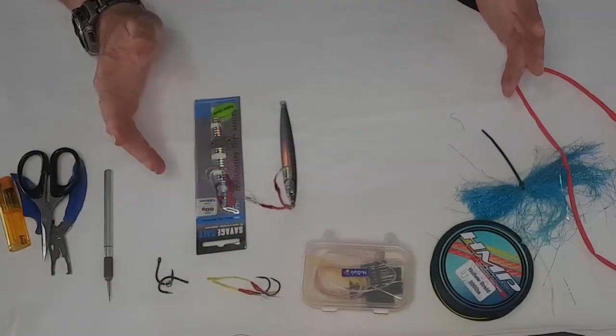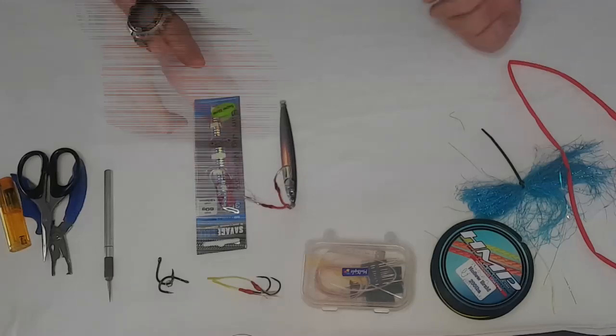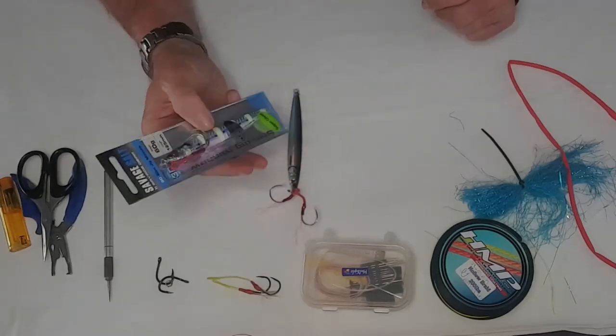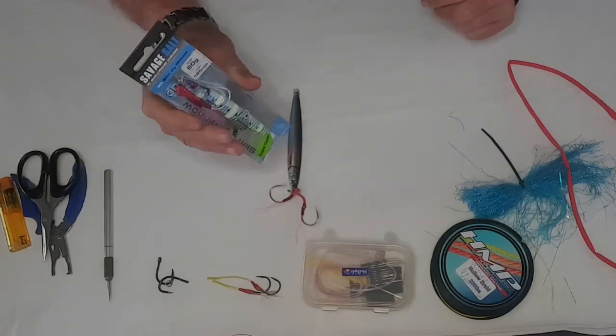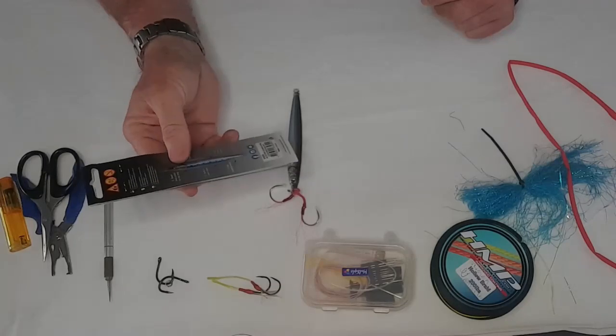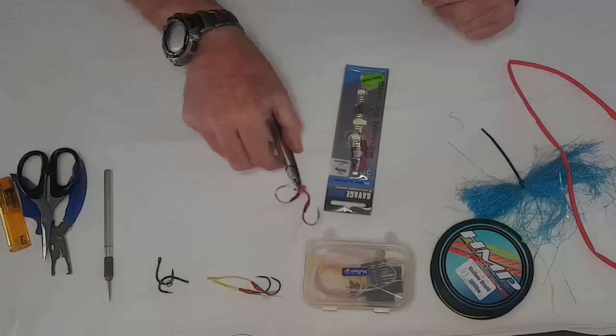Right folks, as we said, we're talking about assist hooks and slow pitch jigs today. Here I've got two jigs with me, both Savage Gear jigs, both 60 gram. Very good brand, currently selling at Trophy Tackle for about 110 rand per jig.